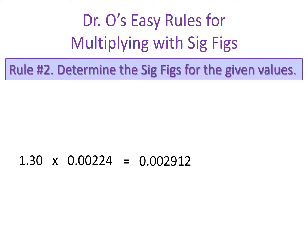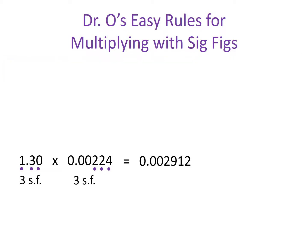Rule number two says determine the significant figures of our given values. For our first value, it has a zero at the end. Does the trailing zero count? Yes, because trailing zeros count when there is a decimal present. So 1.30 has three significant figures. Our second given value has leading zeros, and the rule is that leading zeros never count when tallying significant figures. The only significant digits are the two twos and the four, so our second value also has three significant figures.